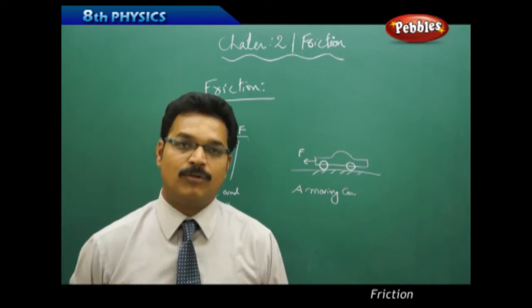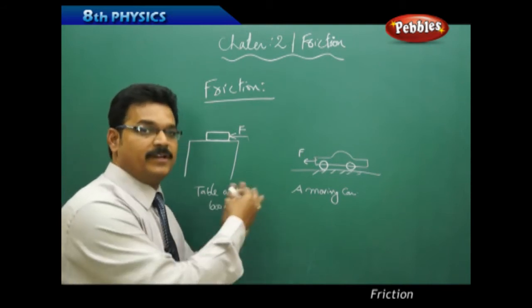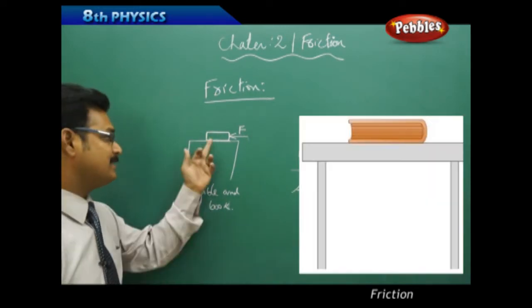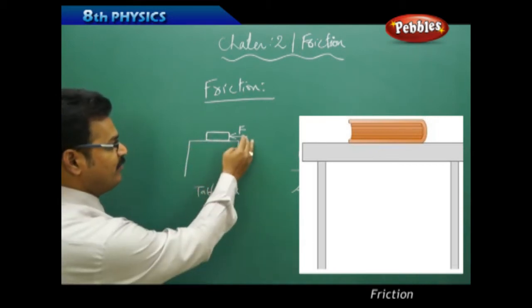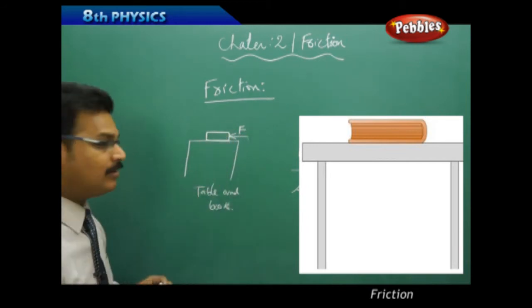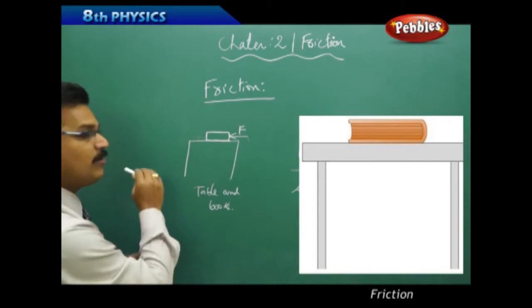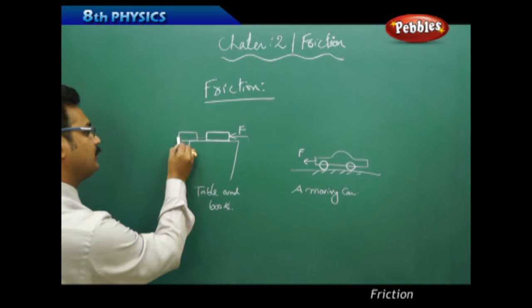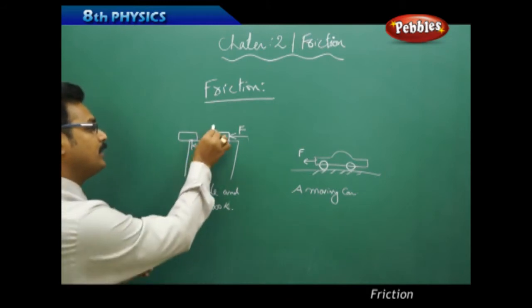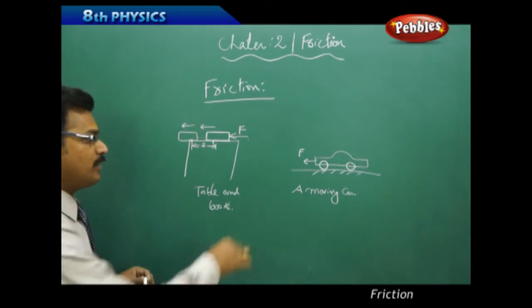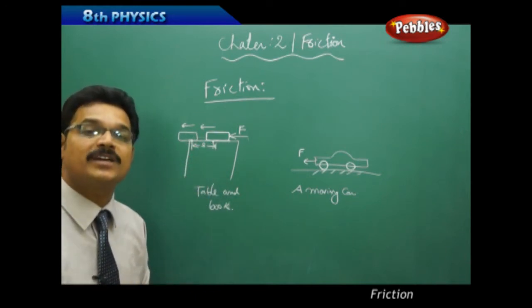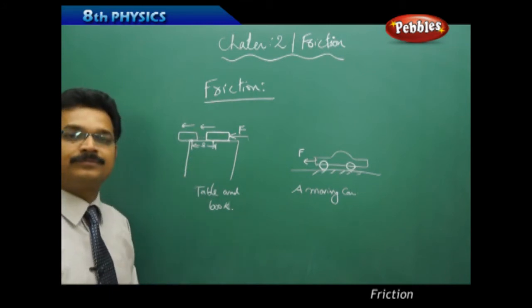The first example: there is a table, and on the table there is a book — you can imagine it as a book or a block. A force F is applied on the block. Now the block is not moving, or if you apply enough force the block starts moving, and at one point it stops. The question is: when you applied the force, why did the block move some distance and then stop? Why can't it move for an infinite amount of time? The answer is simple — because of friction.